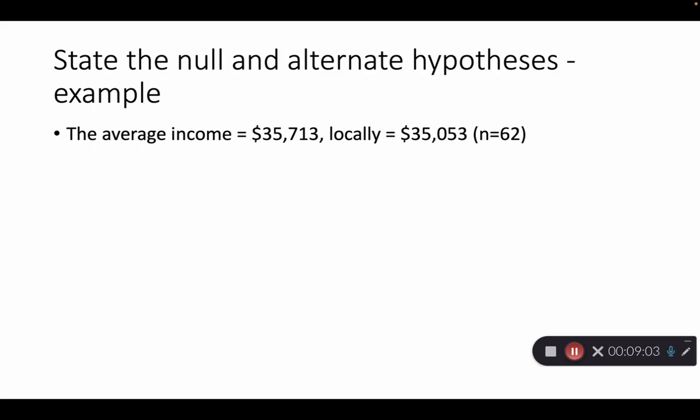And the question then becomes, is this significantly off of the actual average that we would expect? Is it outside the realms? Meaning, does this population actually have a distinct difference between the national average, which actually can give us a lot of information? So the question first, though, is what's the null? The null would be assuming that mu is the actual value there, the 35,713, right? The alternate is that it's less than 35,713. Why less than? Because locally, the local value is less.